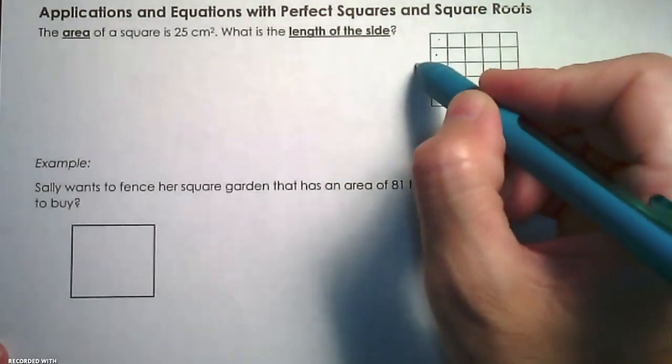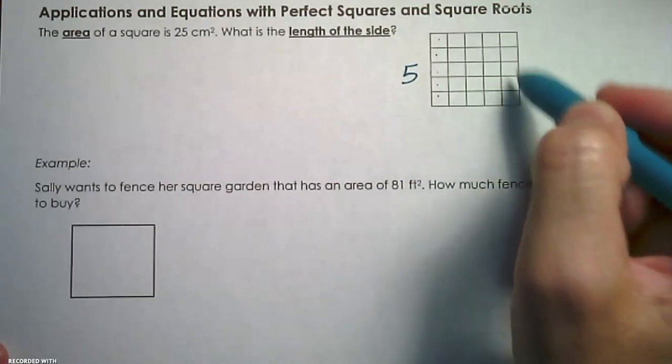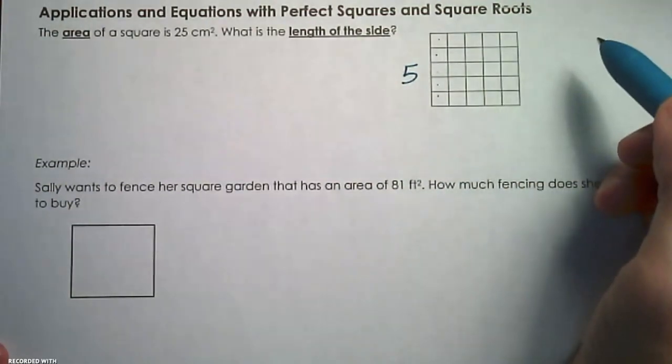Count it 1, 2, 3, 4, 5. This side is 5. All the sides are 5, right, because it's a square, and a square has four congruent sides.